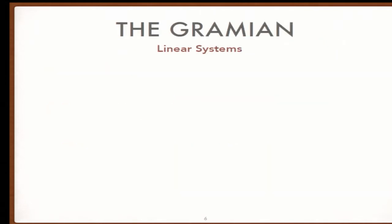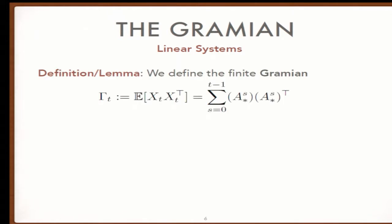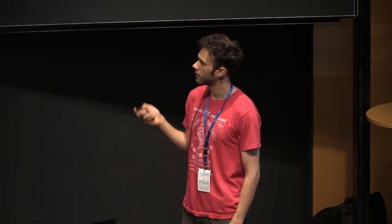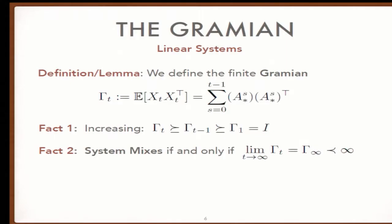The intuition for why mixing might be the wrong way to understand sample complexity is to look at the Gramian or covariance structure. We define the finite time Gramian as the expectation of the outer product of the t-th covariate. As it takes more excitations over time, it's an increasing positive semi-definite matrix. The Gramian encapsulates how quickly the system mixes.